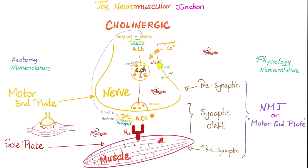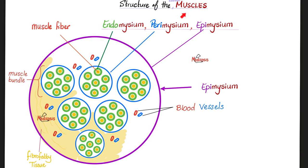Your biceps will get activated and start contraction. The name of all of this is the neuromuscular junction, or the motor end plate.